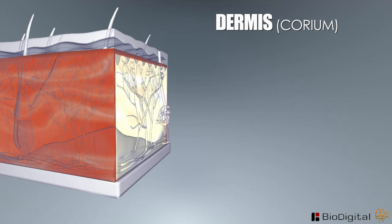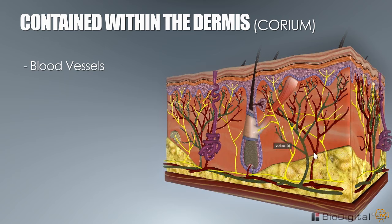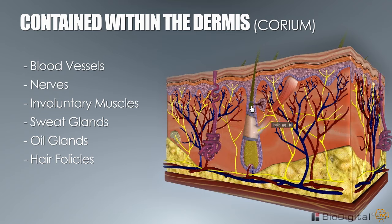Dermis, also known as the corium or the true skin. This layer contains major structures and functions for the skin within a framework of elastic connective tissue. This is where the skin comes to life. Contained within the dermis are blood vessels, nerves, involuntary muscles, sweat glands, oil glands, hair follicles, and the papilla.